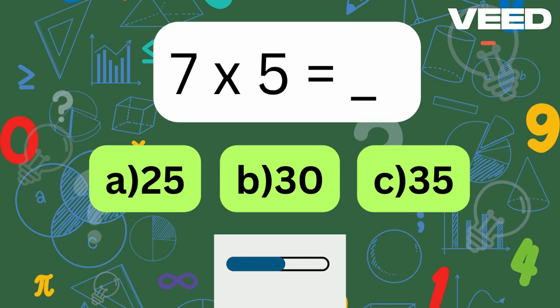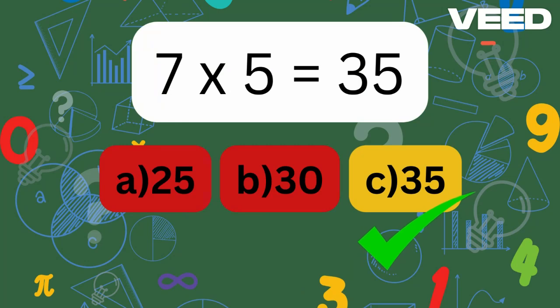7 times 5 is? Well done, 7 times 5 is 35.